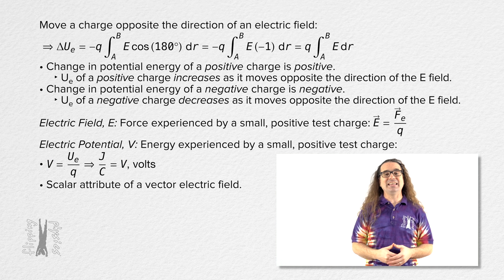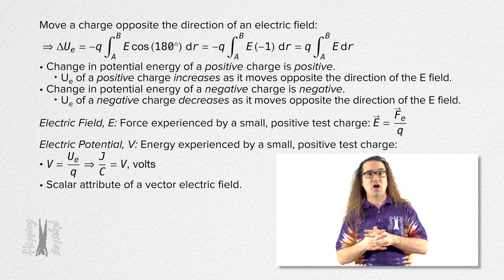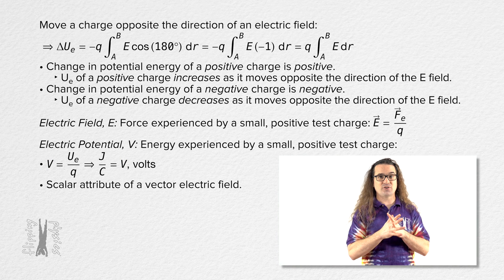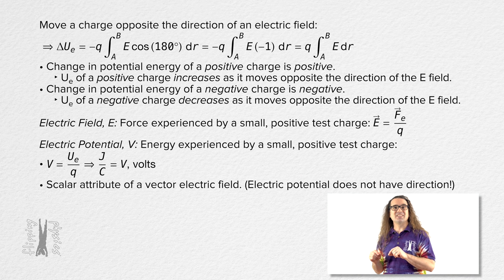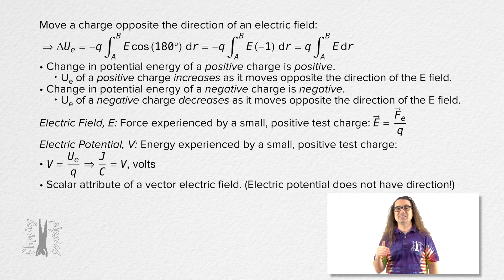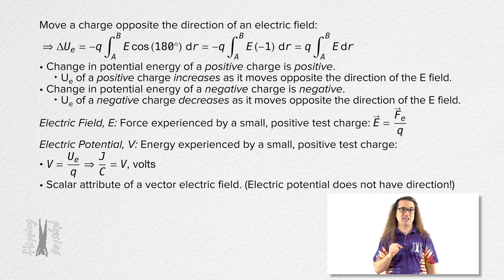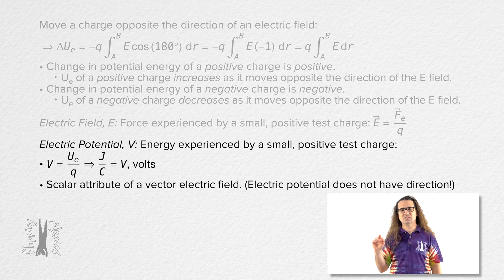Electric potential is a scalar attribute of a vector electric field. In other words, the electric potential does not have direction. This fact that electric potential is a scalar can be very helpful in this class, and I'll demonstrate that later in this lesson.